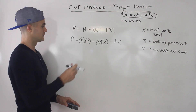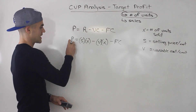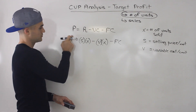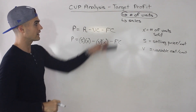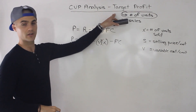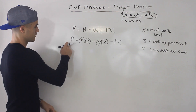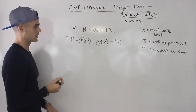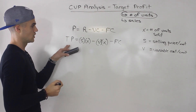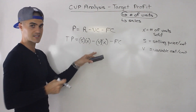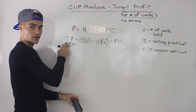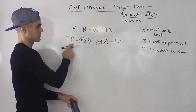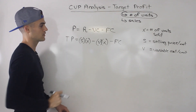When we dealt with breakeven, that was happening when the profit was zero — we would put a zero there. But now we're going to have a certain target profit, so instead of zero I'm going to put TP for target profit. So what units do we have to sell to achieve this target profit? It's not going to be zero like breakeven; there's going to be an actual number here now.